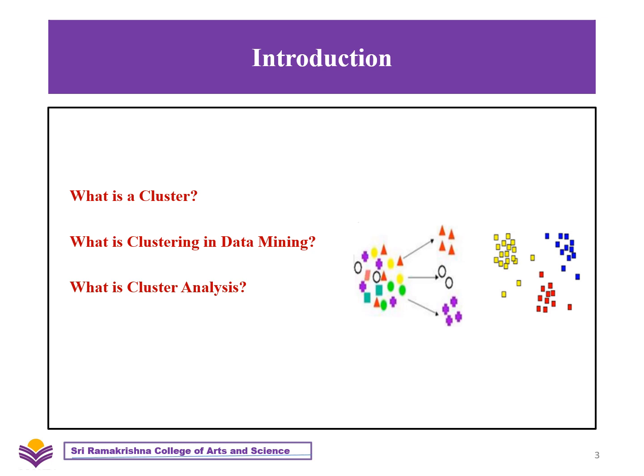Now let us see what clustering in data mining is. Clustering is a method of converting a group of abstract objects into classes of similar objects. Or, clustering is a method of partitioning a set of data or objects into a set of significant subclasses called clusters. Cluster analysis is finding groups of objects such that objects in a group will be like one another and different from the objects in another group.